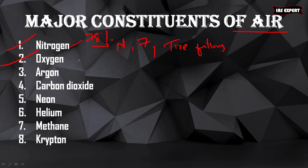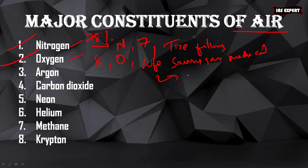Coming to the second major constituent: oxygen. Atomic number is 8 and symbol is O. It is used as a life-saving gas in the medical industry and is also used in the metal industry.